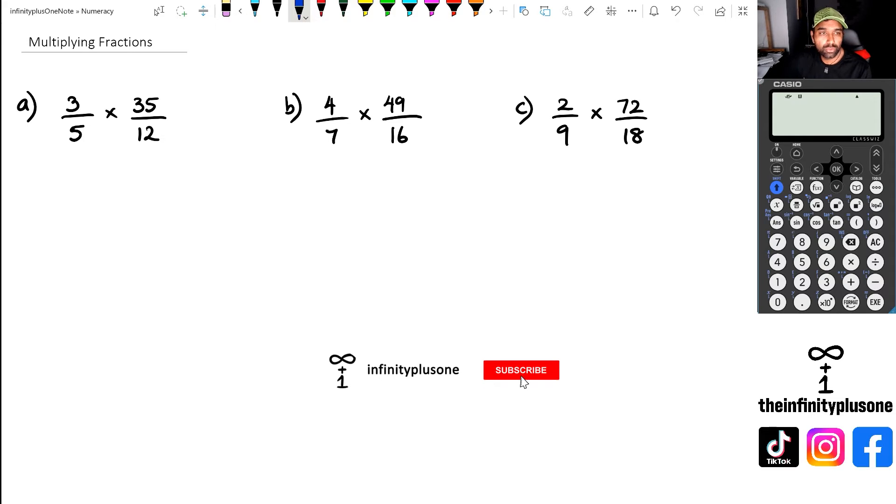Okay, so let's have a look at question one here. When you're doing multiplication of fractions, what you would do is you would actually multiply the numerators together, and then you would multiply the denominators.